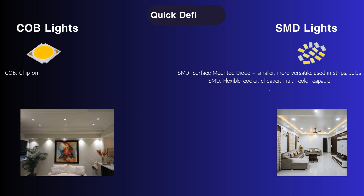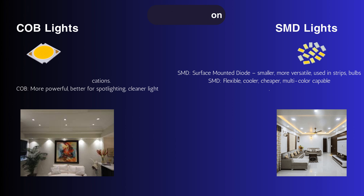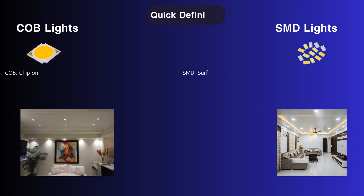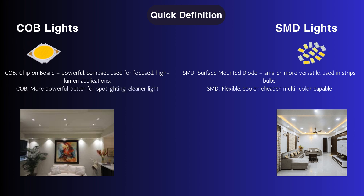Chip on board — powerful, compact, used for focused, high-lumen applications. More powerful, better for spotlighting, cleaner light. SMD, surface-mounted diode — smaller, more versatile, used in strips and bulbs. SMD is flexible, cooler, cheaper, and multicolor capable.